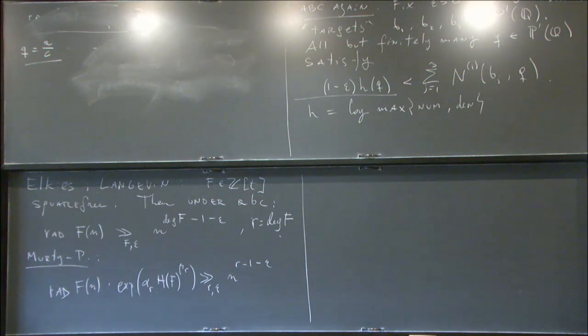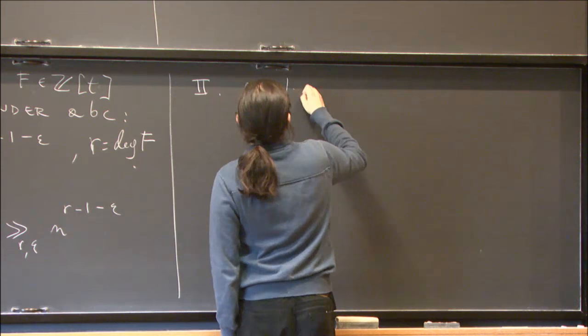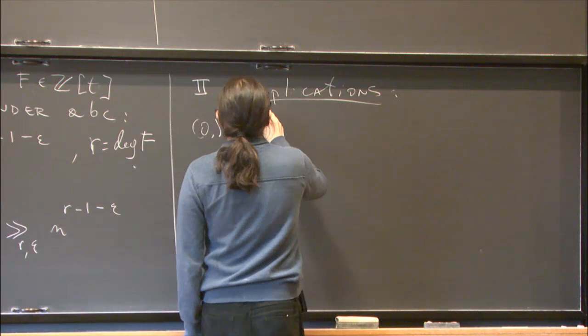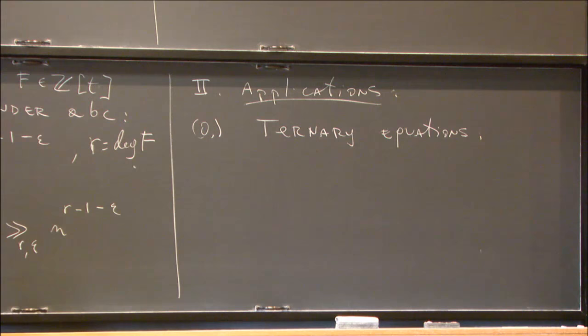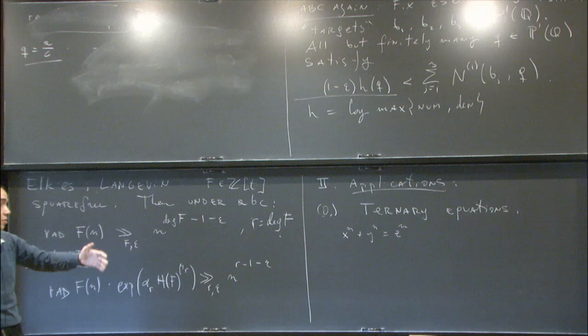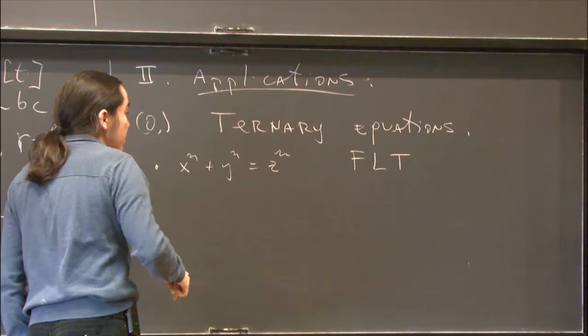Let me mention some applications. The first, application zero, is Diophantine equations. It's classical and elementary how to apply ABC to an equation with three terms. For instance, x^n plus y^n equals z^n — Fermat's equation — is already proved (Wiles' theorem). But applying ABC to this shows how powerful the conjecture is: it gives right away a solution for sufficiently large n. ABC seems to imply this directly for large n, which is somehow evidence for this conjecture being difficult.